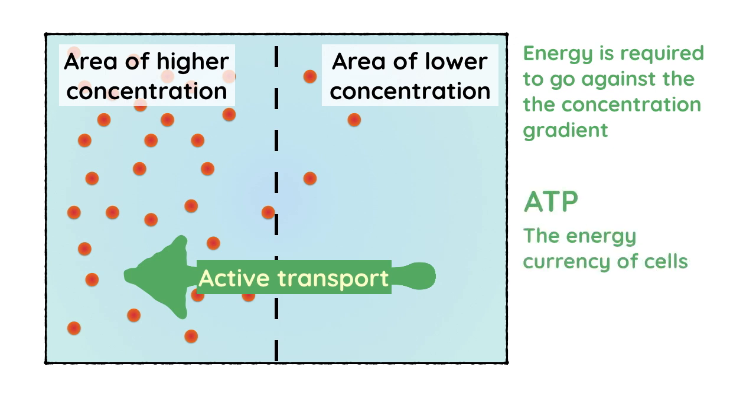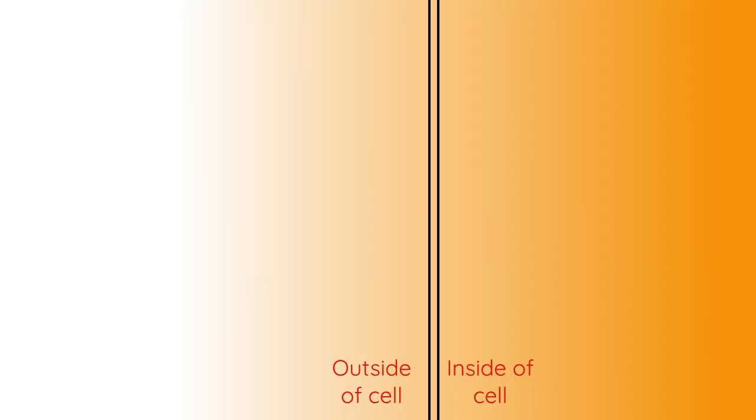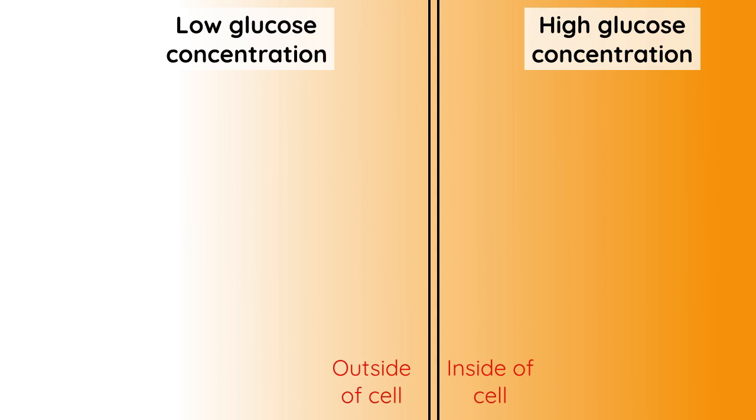ATP is the energy currency of cells and is produced by respiration. Let's look at a specific example. Here you can see the boundary between the inside and outside of a cell. Outside of the cell there is a low glucose concentration, while inside there is a higher glucose concentration. Here we've got the cell membrane.